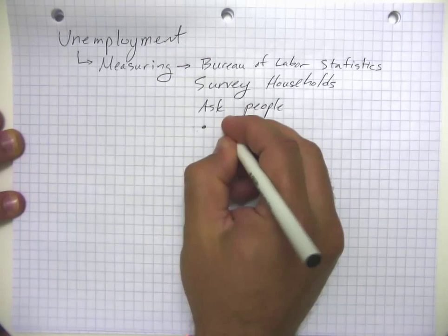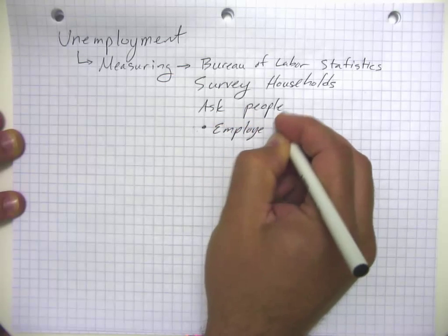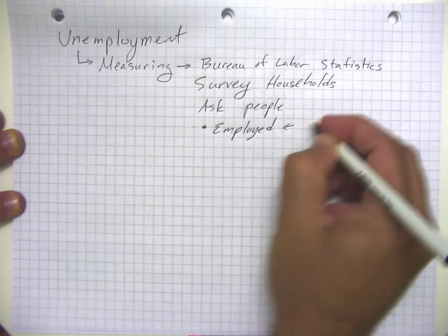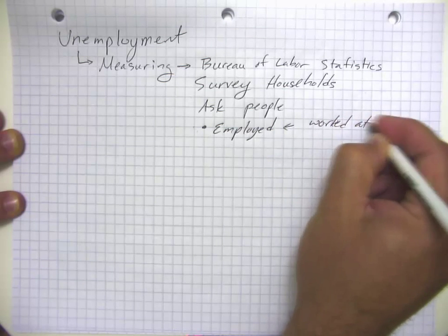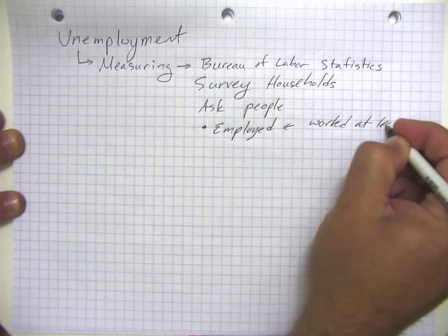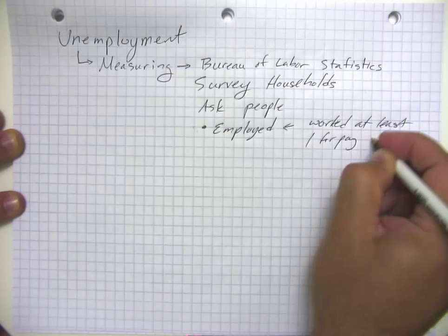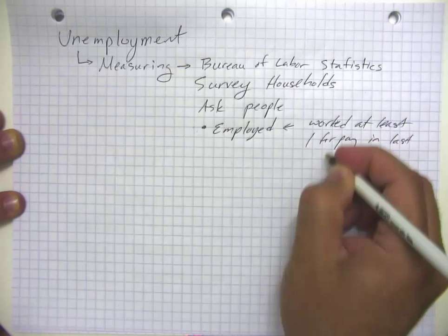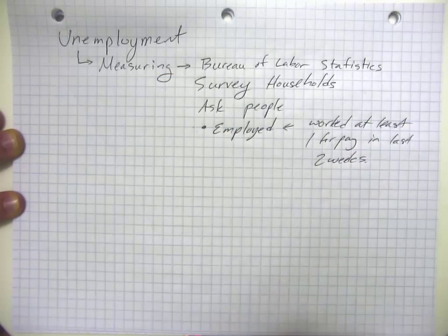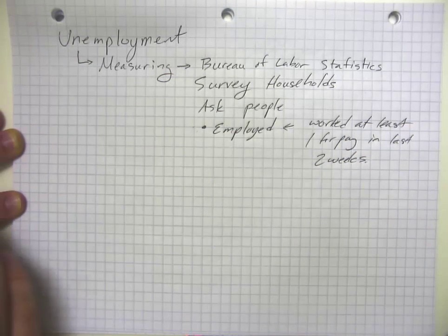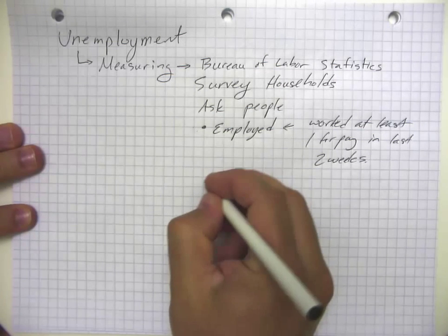They throw people into one of three categories. If you're employed, you worked at least one hour for pay in the last two weeks. And if you work without pay in a family business or farm, that actually counts as employment as well.